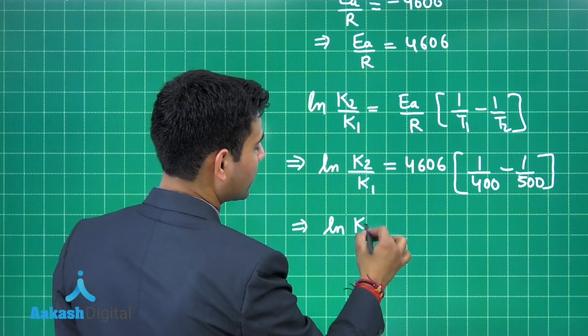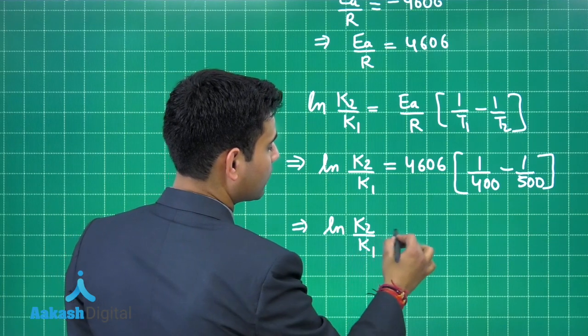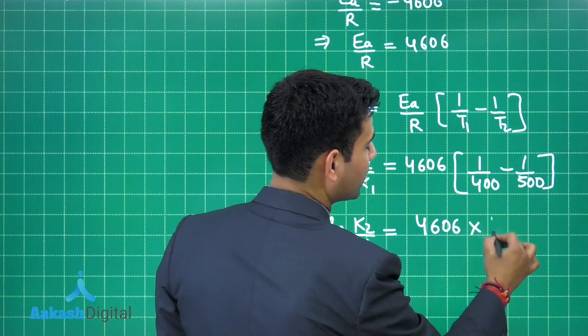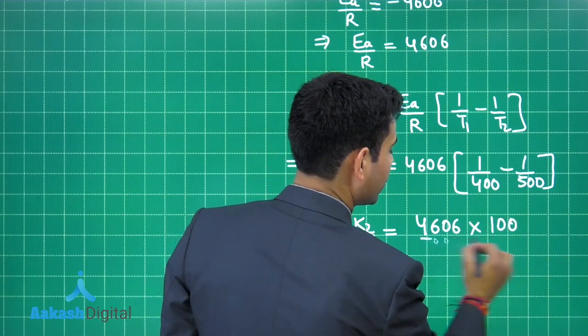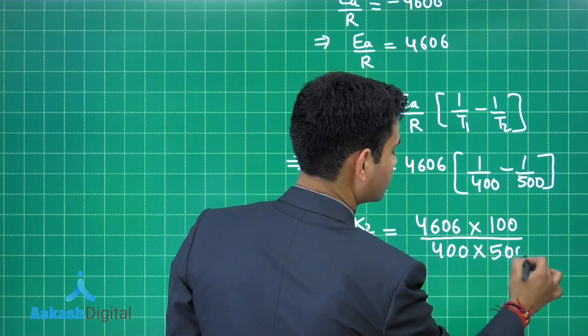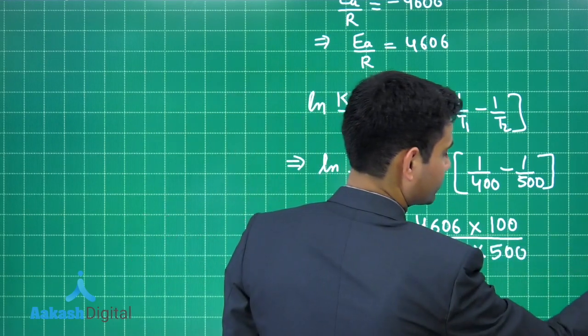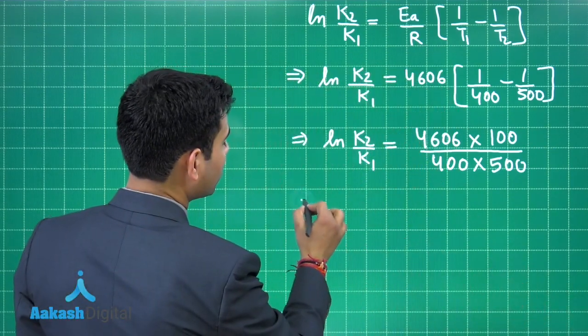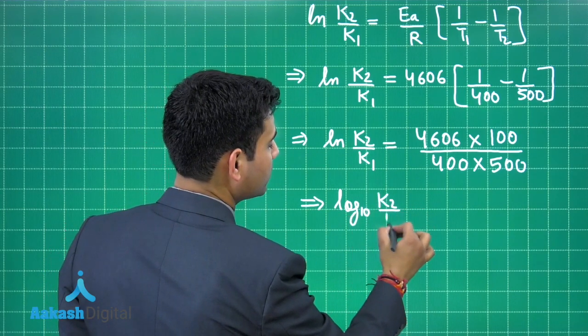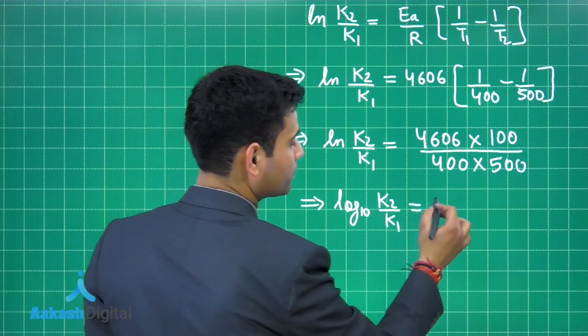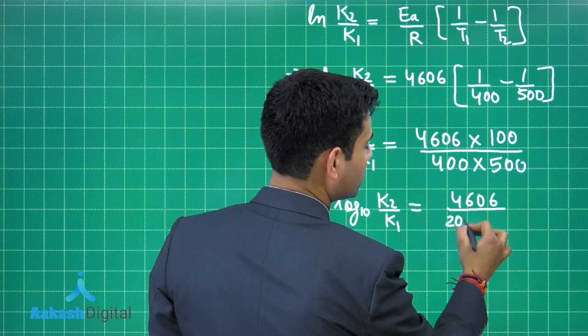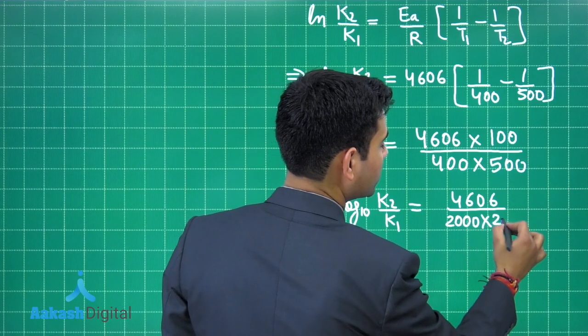This will give us ln K2 by K1 is equals to 4606 multiplied by 100 divided by 400 into 500. From here we can write log K2 by K1 is equals to 4606 by 2000 into 2.303.